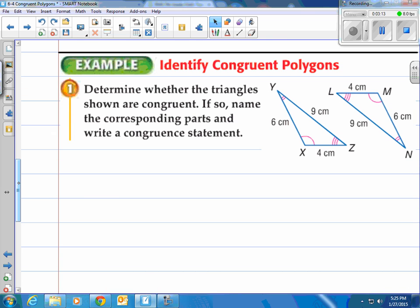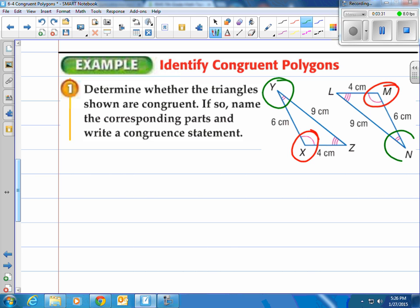Let's take a look at our first example. It says determine whether the triangles shown are congruent. If so, name the corresponding parts and write a congruent statement. Well, I notice we have some arcs. I got X has one arc that matches up with M, Y has two arcs and N has two arcs, and L has three arcs and Z has three arcs.